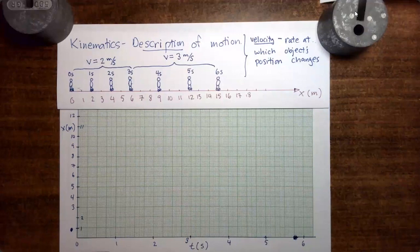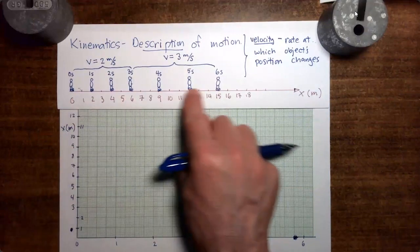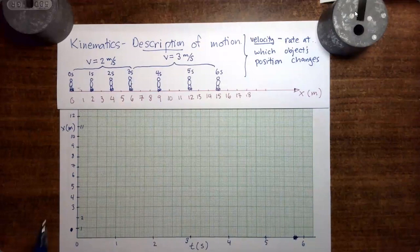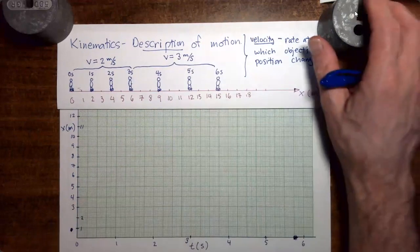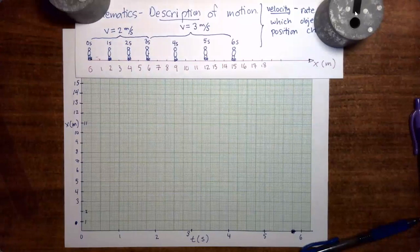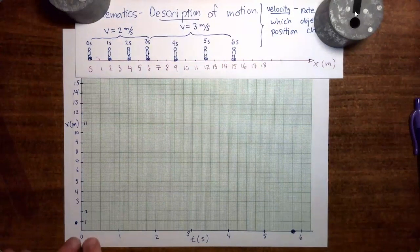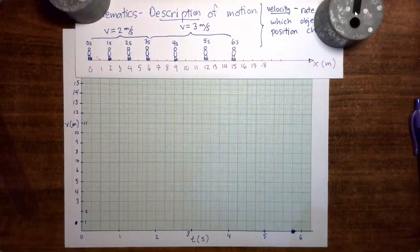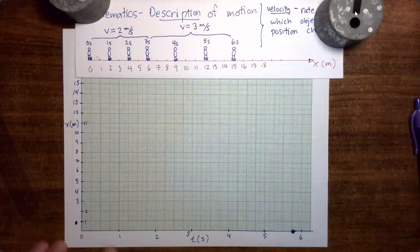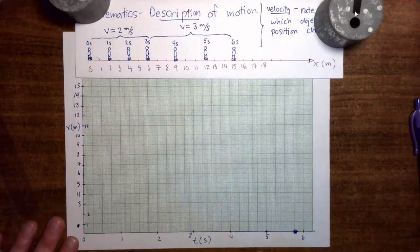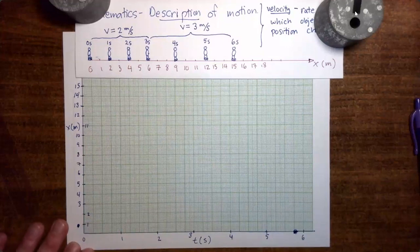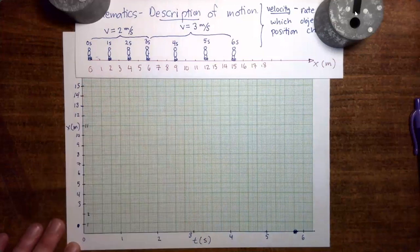Now we're going to come at this from a different angle. We are going to take this information where the position of the person is given at one-second intervals and we're going to plot it. I have prepared a sheet of graph paper here with my time axis along the horizontal and my position axis along the vertical, with time on the horizontal axis going from 0 to 6 seconds and position on the vertical axis going from 0 to 15 meters.